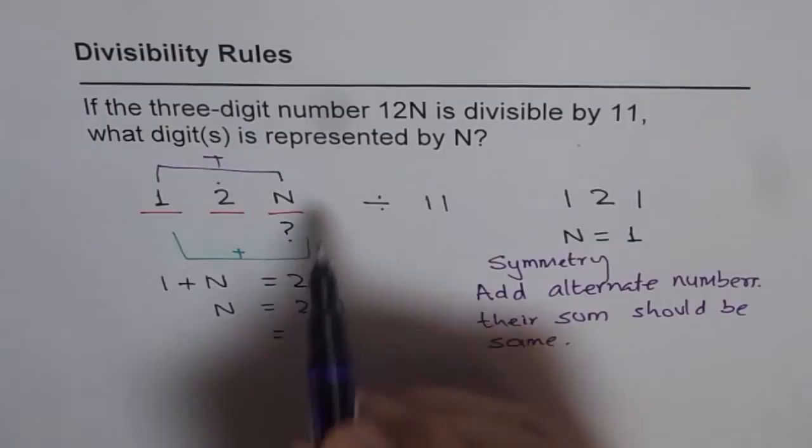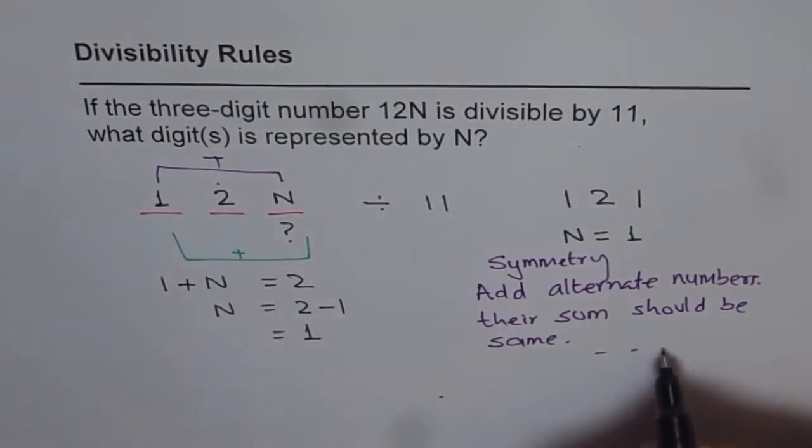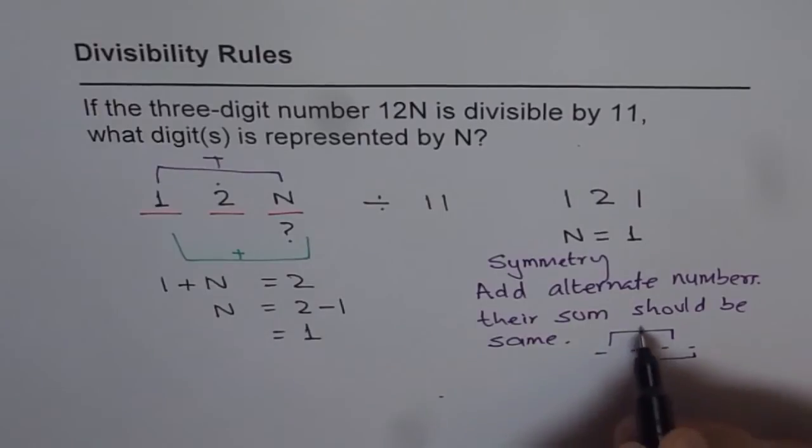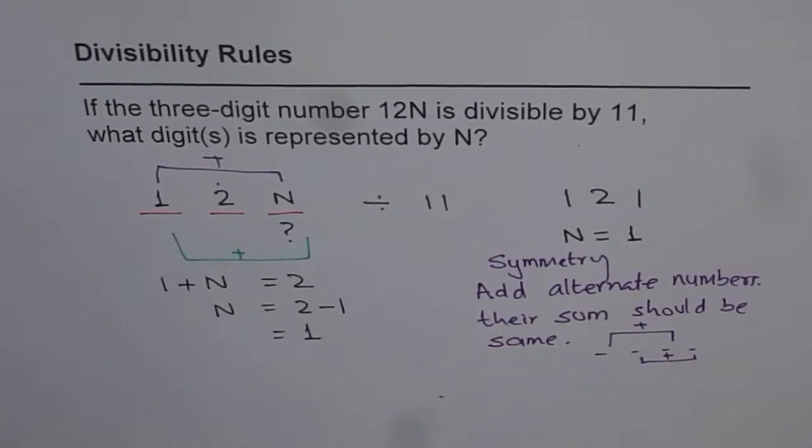If we have 4, then the sum of, let's say we have these 4 numbers, then sum of these 2 should be equal to sum of these 2. That is what it means. So sum of alternate numbers should even out.